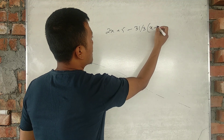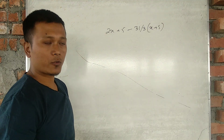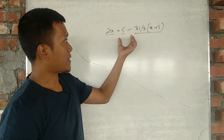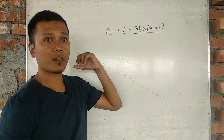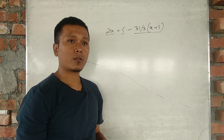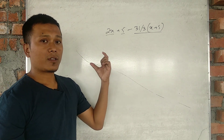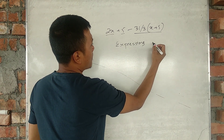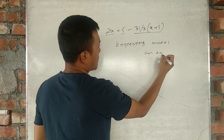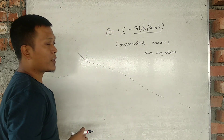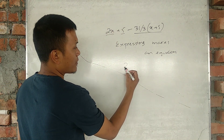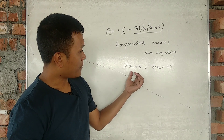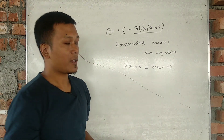This expression, like 2x plus 5 minus 31, is a simple expression. An expression is different from an equation. An equation has an equal-to sign. For example: 2x plus 5 equal to 7x minus 10. Here the equal-to sign is what makes it an equation.